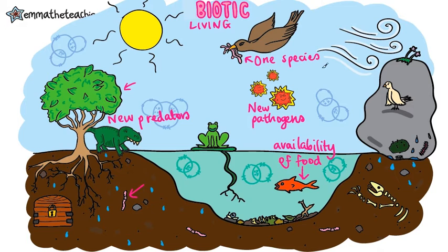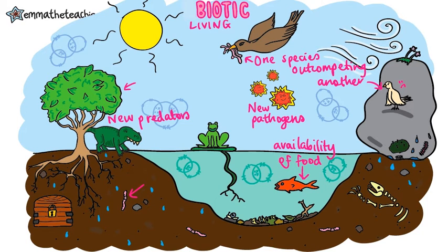One species out-competing another can cause numbers to decrease to the point where they are no longer sufficient to breed. You can see this bird has got loads of worms, while this bird has none.